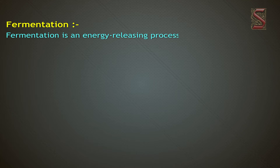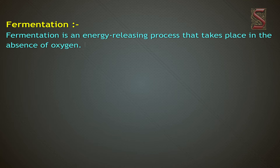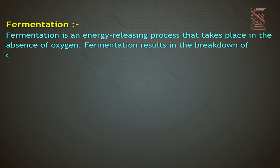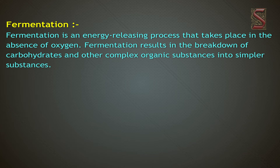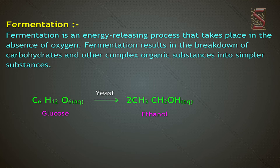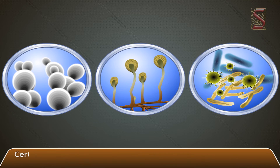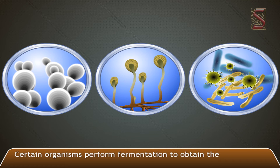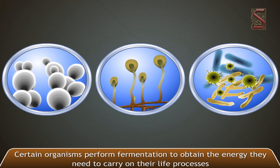Now let us learn about one interesting type of anaerobic respiration: fermentation. Fermentation is an energy-releasing process that takes place in the absence of oxygen. It results in the breakdown of carbohydrates and other complex organic substances into simpler substances. The chemical equation is: C6H12O6 (glucose) → 2CH3CH2OH (ethanol) + 2CO2 (carbon dioxide). Certain organisms perform fermentation to obtain the energy they need to carry on their life processes.